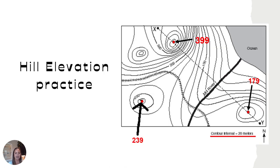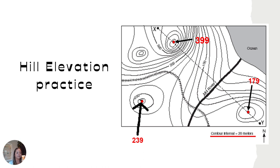For practice: we have 200 here with a contour interval of 20 meters. The next line would be 220, then 240 would exist next — subtract one, you get 239. On the other side: 100, 120, 140, 160, then 180 would be next — subtract one, you get 179. So you always look for one less than the next contour line for your hill elevation.